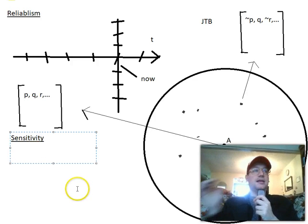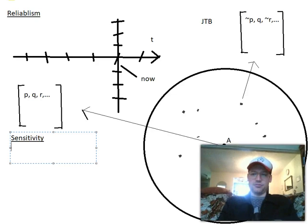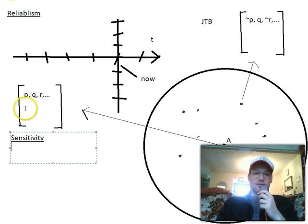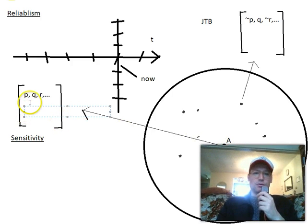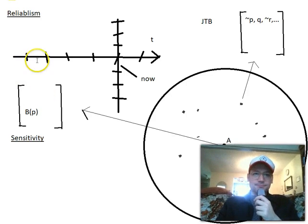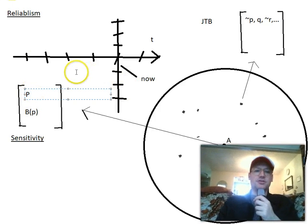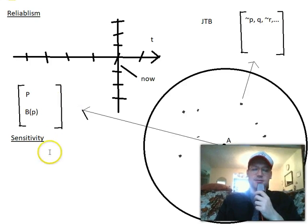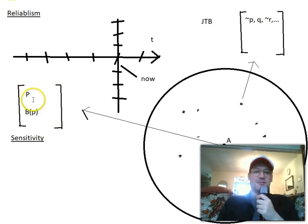Sensitivity theory comes along here. Let's go back to the actual world. In the actual world, you'll notice P is true, and I also believe that P. So we've got two facts that are true in the actual world and a bunch of others too. In the actual world, P is true, and I believe that P is true.